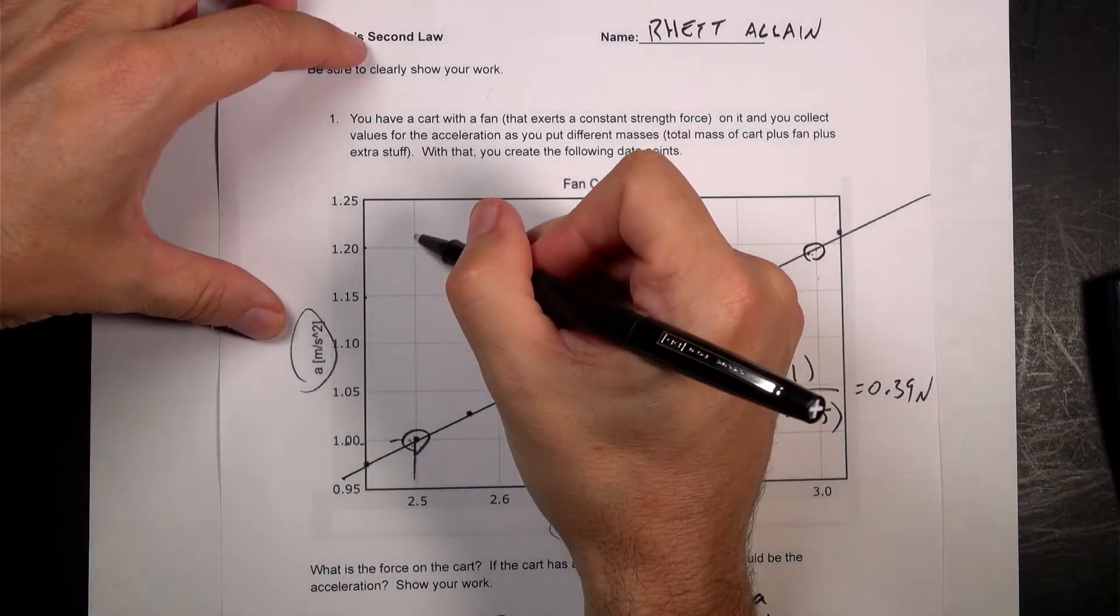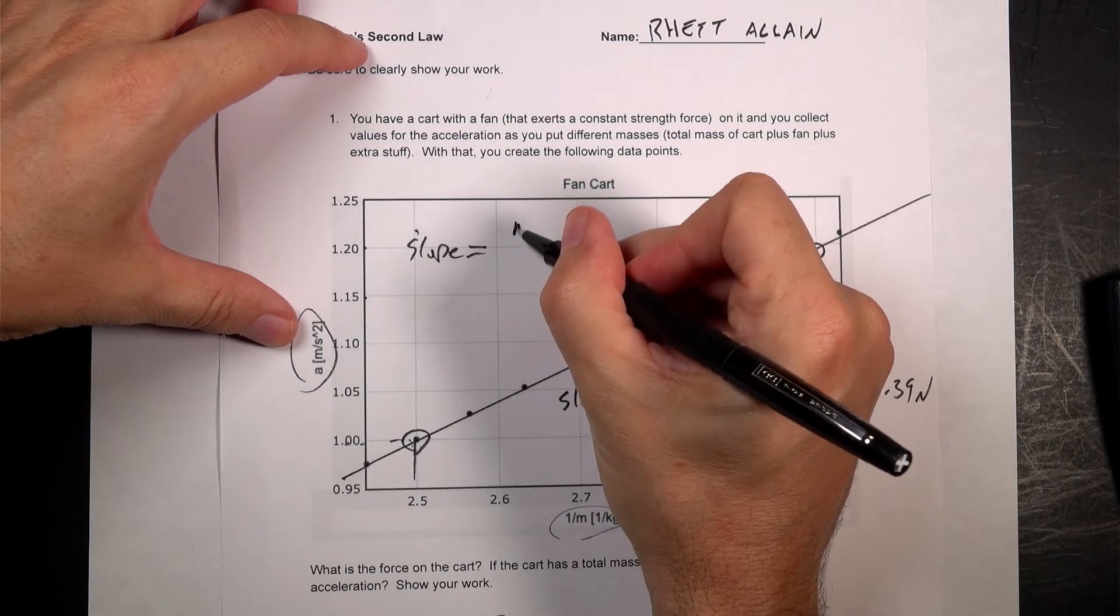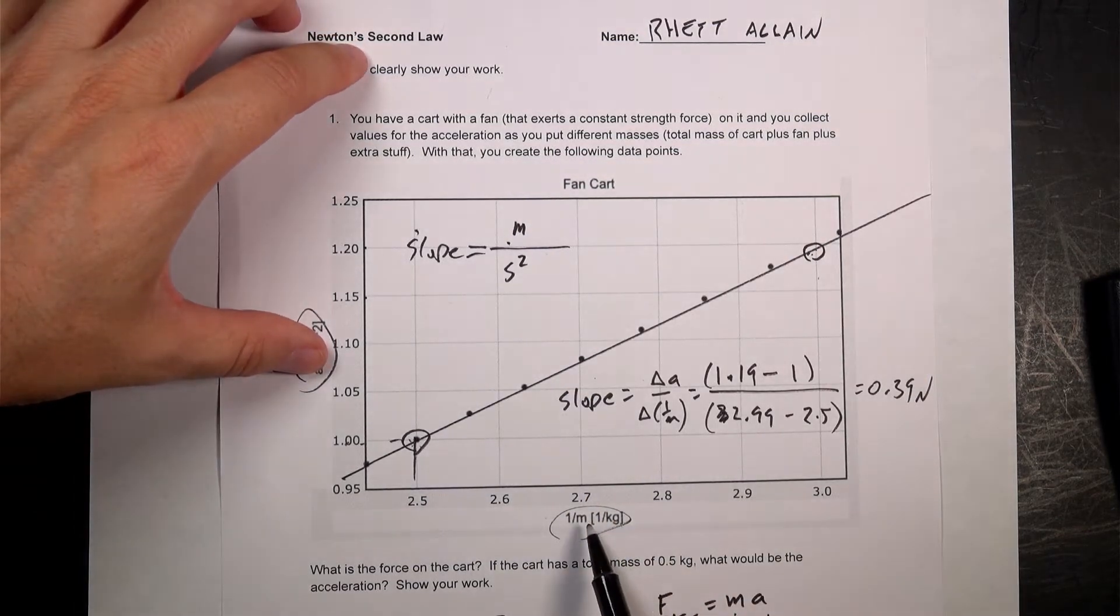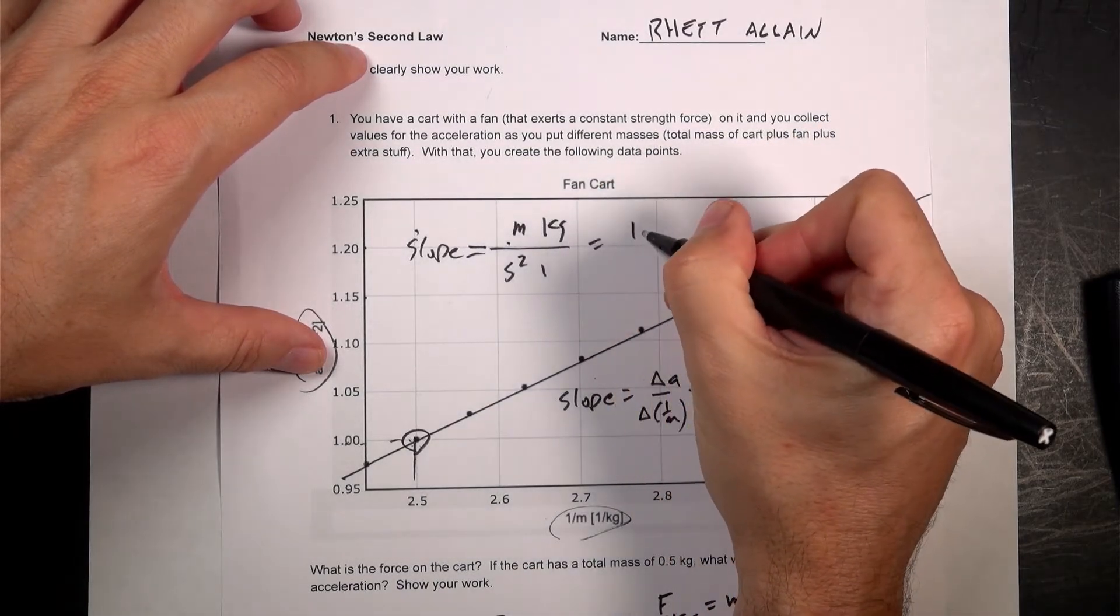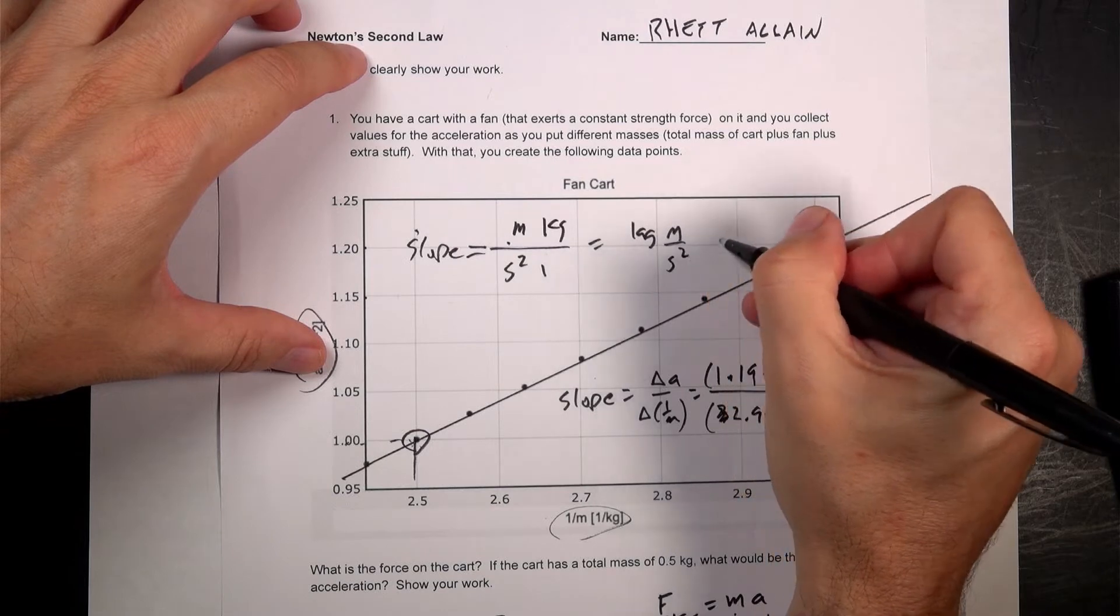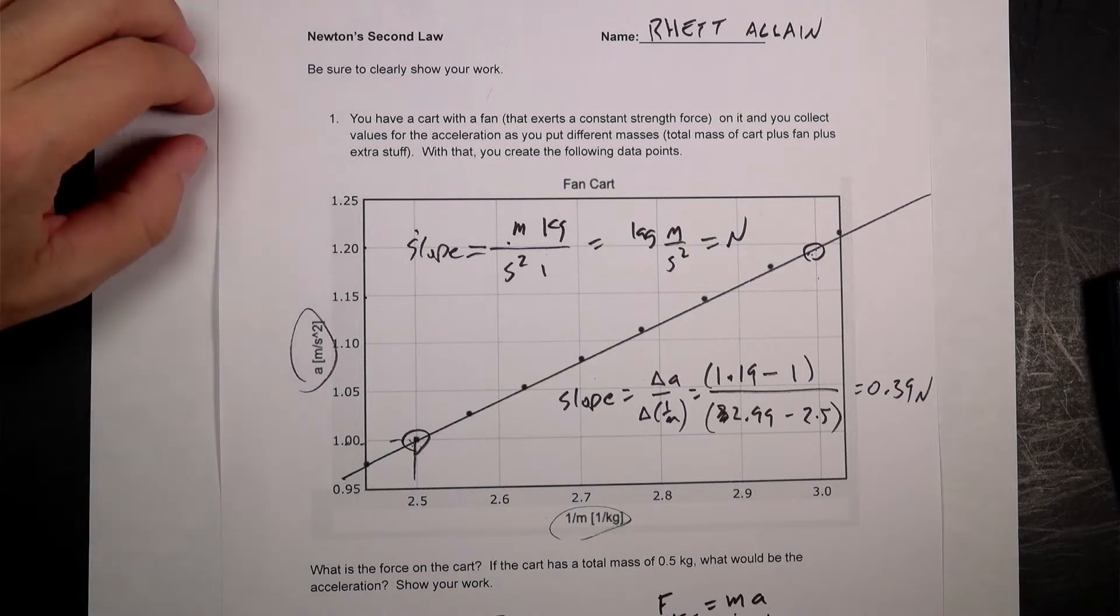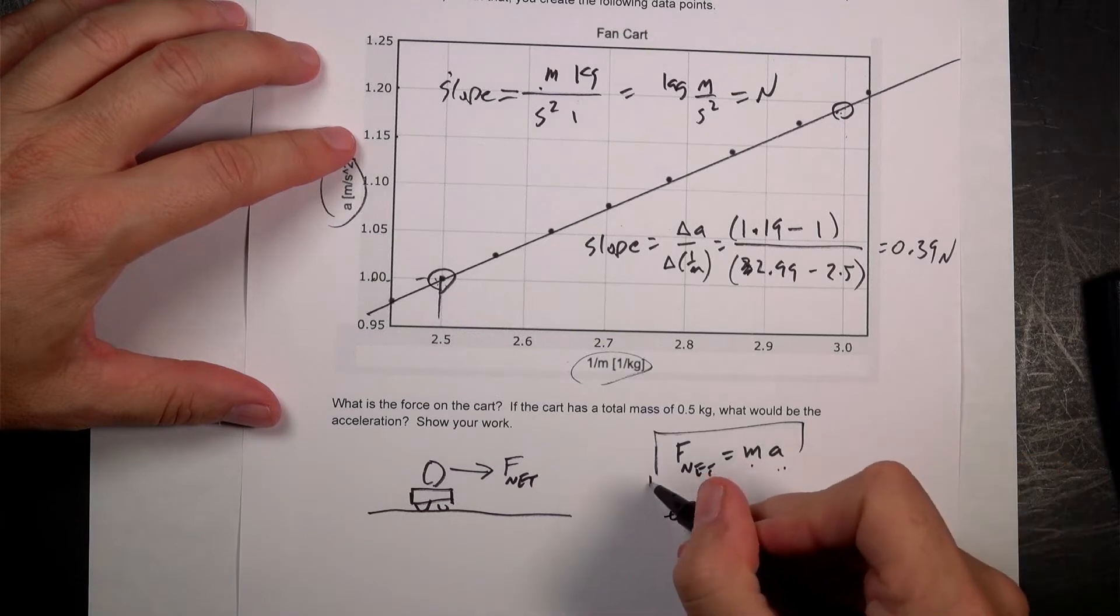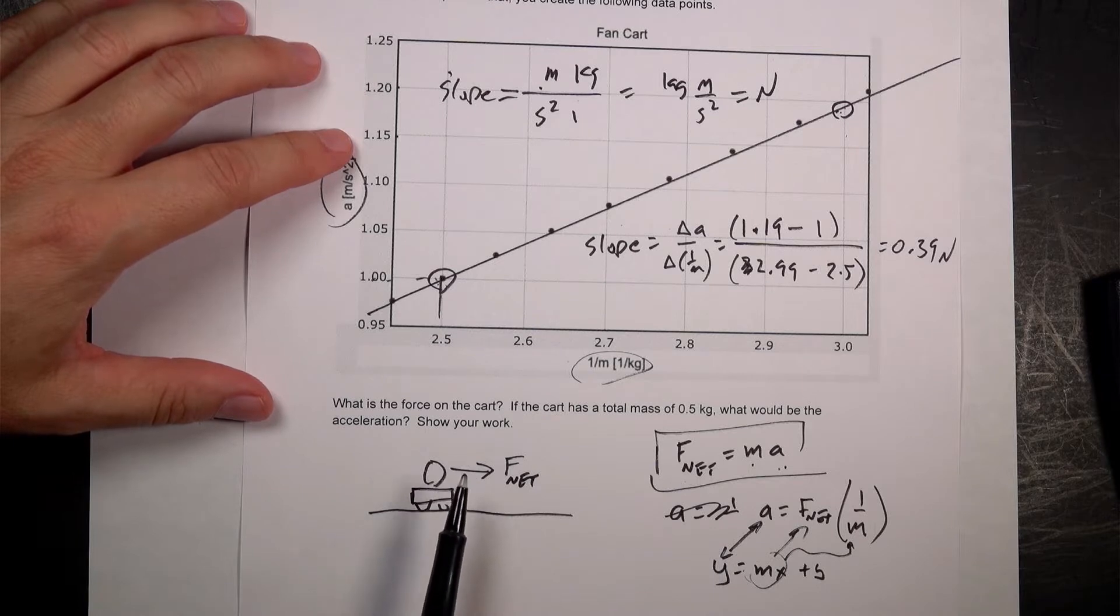Let me just show you that that is indeed Newtons. So if the acceleration, this is going to be slope, has the units of acceleration meters per second squared, and then I'm going to divide by the units for this, which is 1 over kilograms. So I get kilogram meter per second squared. And that is a Newton. So this does give me units of Newton. That's always a great thing to see.